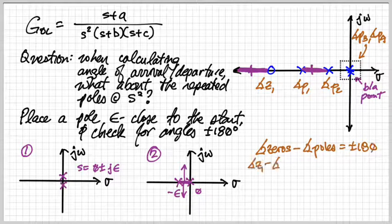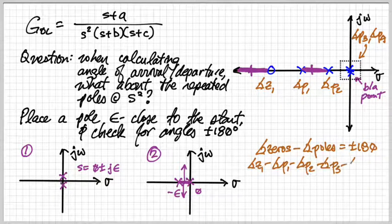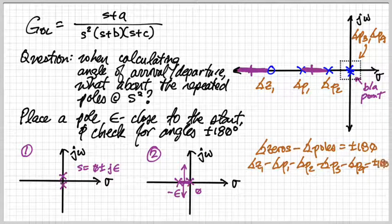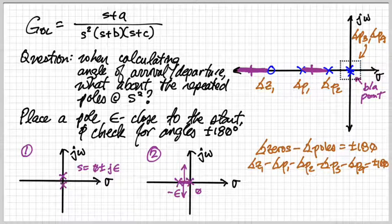In order to calculate the angles of departure or arrival, we take the sum of the zeros minus the sum of the poles, or the zeros minus the poles I should say, and compare those values whether they're equal to plus or minus 180 degrees. In our case we have one zero and four poles, so one, two, three, four.